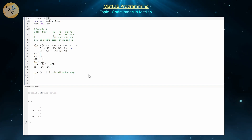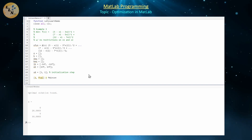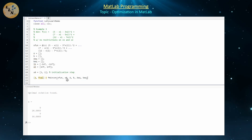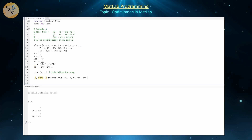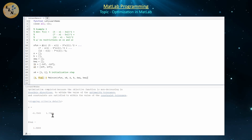The function we'll use is FMINCON, which returns two values: the optimal x and the optimal function value fval. We call fmincon(ofun, x0, A, B, Aeq, Beq, LB, UB). Since we're minimizing, we don't need to negate any constants. Running this gives the solution: x1 ≈ −0.05, x2 ≈ 1.75, with a minimum function value of 1.5.